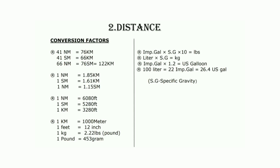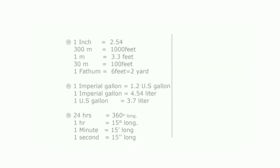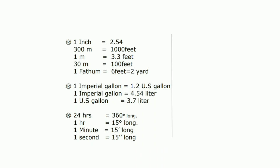Let's start Chapter 2: Distance. This is a very important chapter. The first topic is conversion factors. In every DGC exam there are two or three questions from this topic. For example, 1 nautical mile equals 1.76 kilometers. You need to memorize all the conversion factors to solve numericals on conversion. I'll cover the numerical part in upcoming videos; in this video we'll just cover the theory.